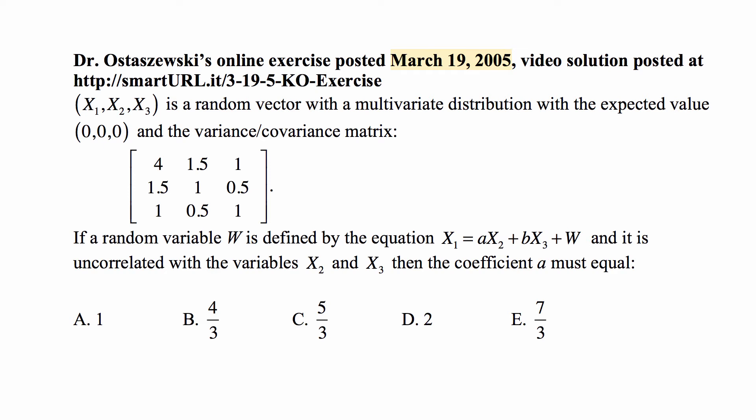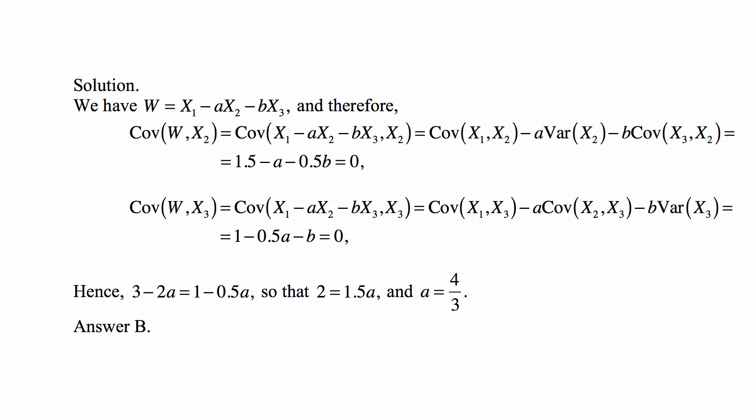If a random variable W is defined by the equation X1 equals AX2 plus BX3 plus W, and it is uncorrelated with the variables X2 and X3, then the coefficient A must equal, and you have five choices for this. Of course, this equation defining W is not explicit, but we can write W as X1 minus AX2 minus BX3.